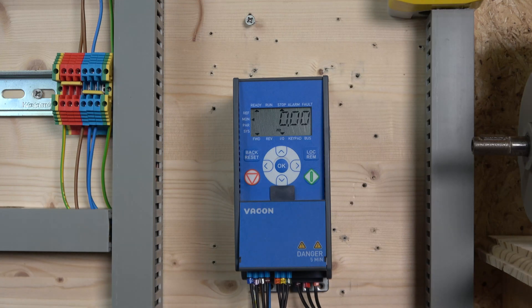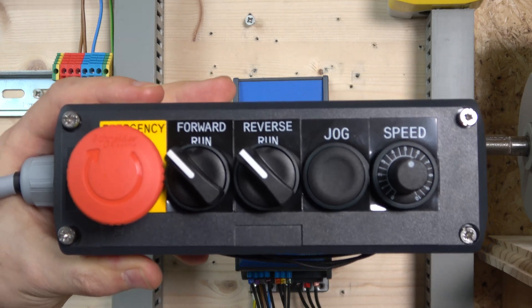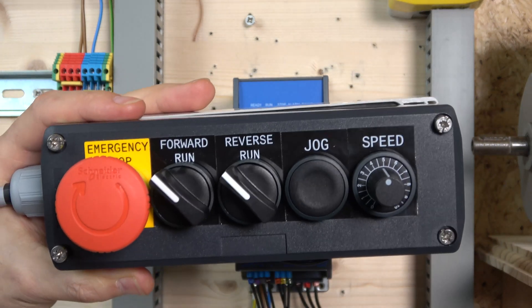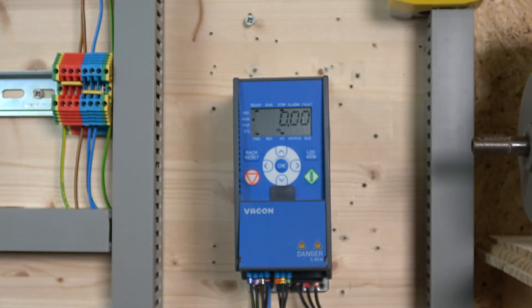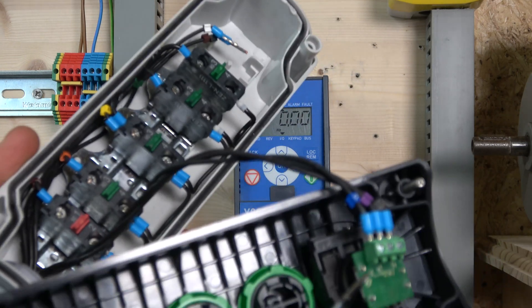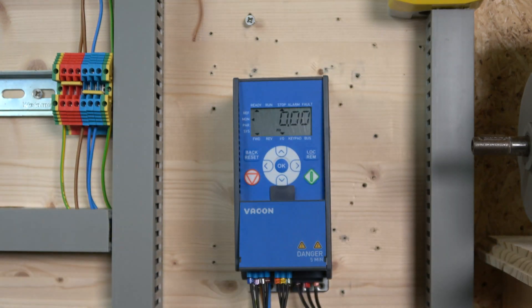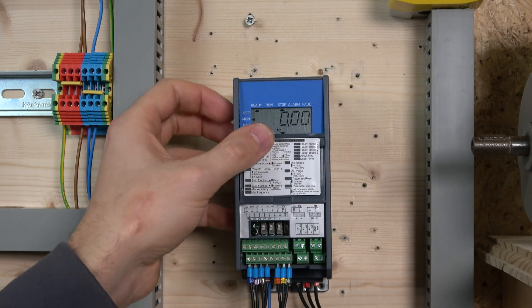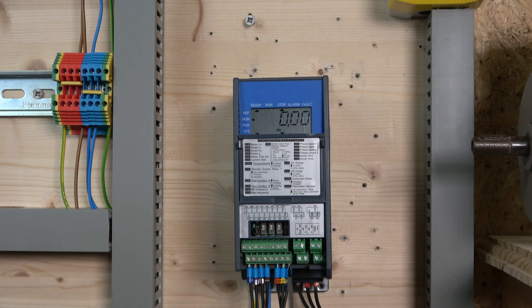Our first station will have run-forward, run-reverse, jog, and we'll be using a remote potentiometer rated from 1 to 10 kilohm. The three cables from the potentiometer go into terminals one, two, and three.